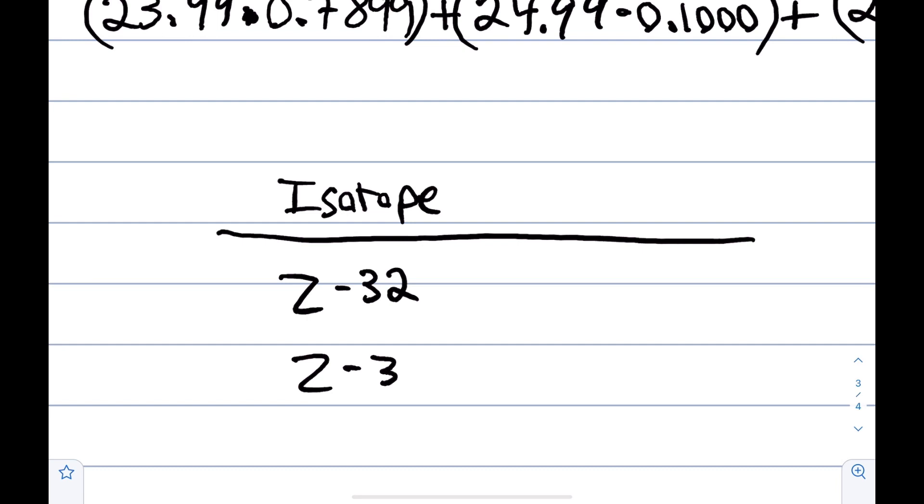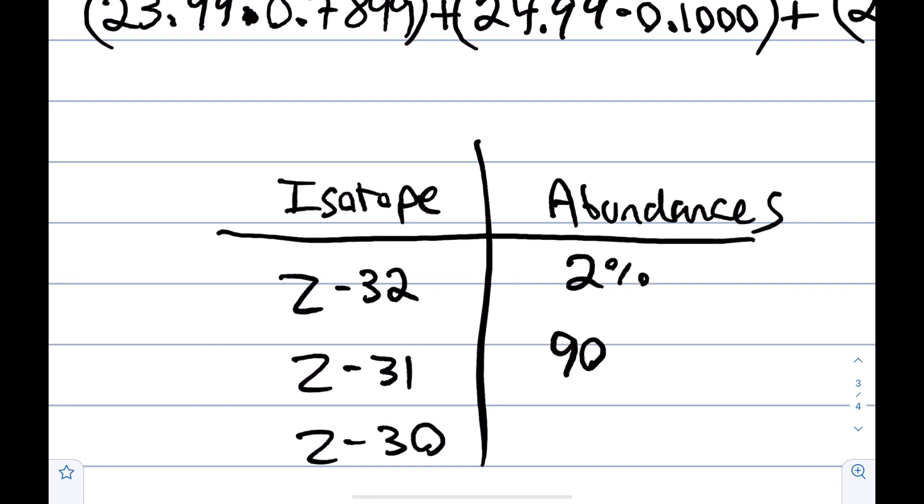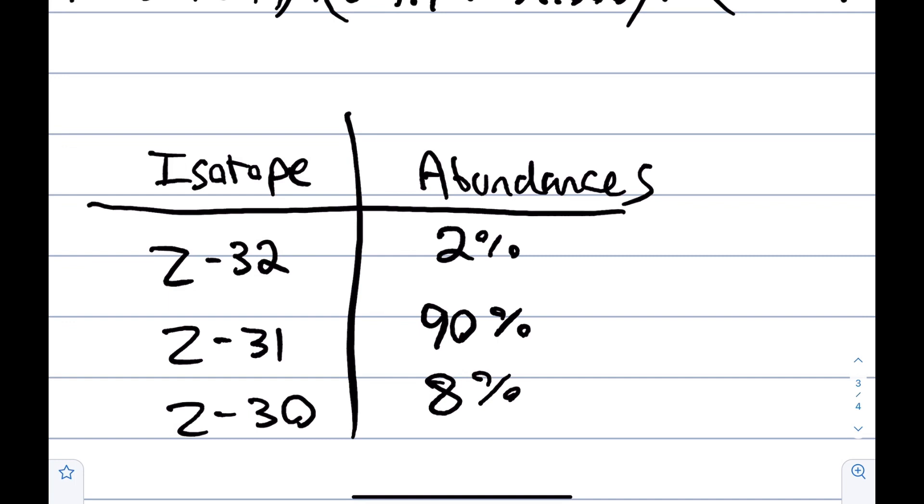And we're going to do whole numbers. And if the abundances here are 2%, 90%, and 8%, then if I got the number of 31.96, would that make sense? Well, most of our isotopes or most of our element Z is in the form of isotope-31, right? So, we would expect it to be nearer 31 than 32. And even within 31, we would expect it to be lower rather than higher because 30 has more of a weight in our weighted average. It has a higher percent than 32 does.